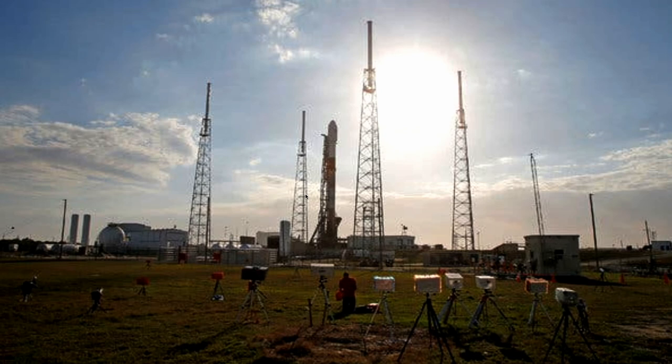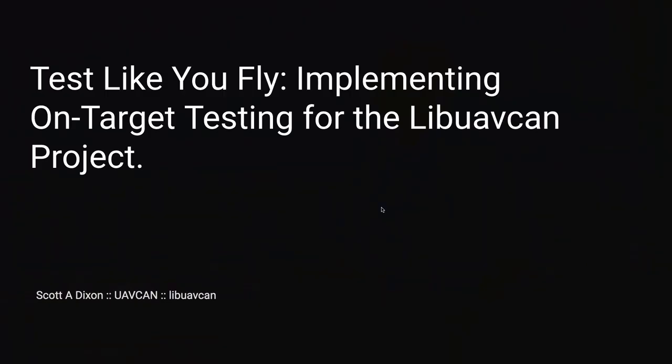So this is going to be a really short talk, kind of an after-lunch palate cleanser, about something we're doing on the LibUavCAN project, which is a C++ implementation of UAVCAN. It's going to be about how we are building a hardware test pipeline for this project. My name is Scott Dixon. I've been working with Pavel on the UAVCAN specification V1 — we are going to have a talk on that later this afternoon — and I have been writing the V1 version of the C++ implementation of that protocol.